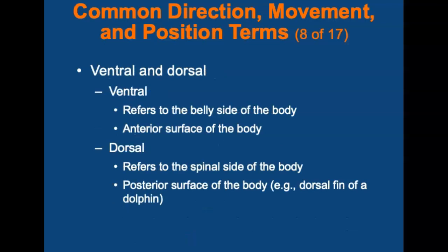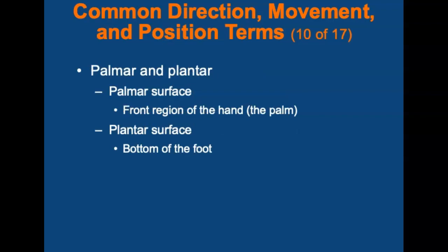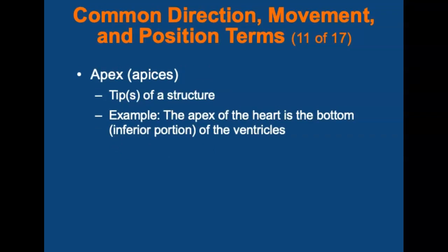Ventral refers to the belly side of the body, or the anterior surface. Dorsal refers to the spinal side of the body, or the posterior surface. Think of a dorsal fin of a dolphin, which is on its back. The more commonly used terms are anterior, meaning the front surface of the body, and posterior, meaning the back surface. The front region of the hand is referred to as the palm or palmar surface, and the bottom of the foot is the plantar surface. The apex is the tip of a structure — for example, the apex of the heart is the bottom or inferior portion of the ventricles on the left side of the chest.